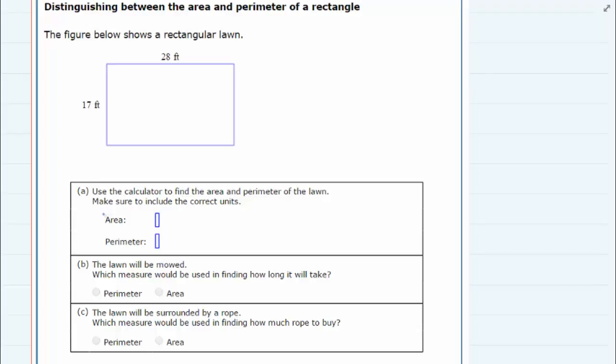We're asked in this question to answer a couple different questions about this rectangular lawn. The first question asks us to calculate the area and the perimeter and to make sure we have the correct units.